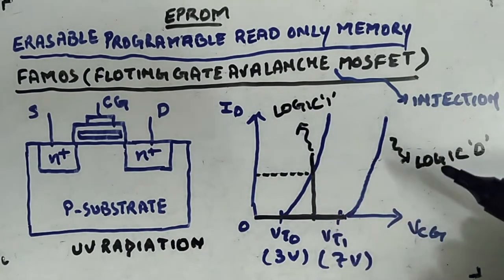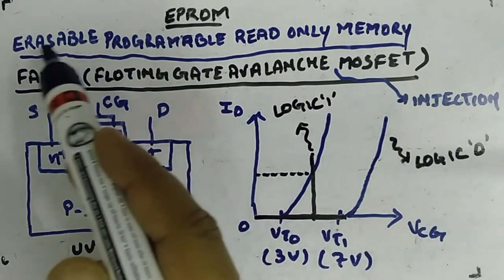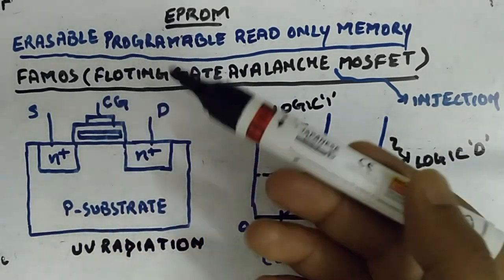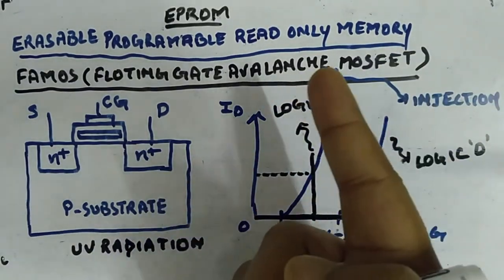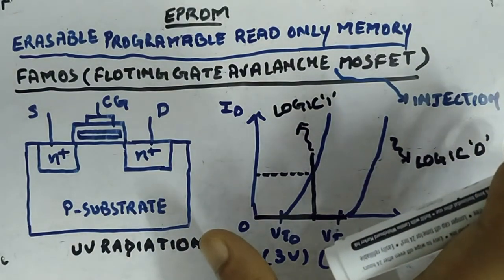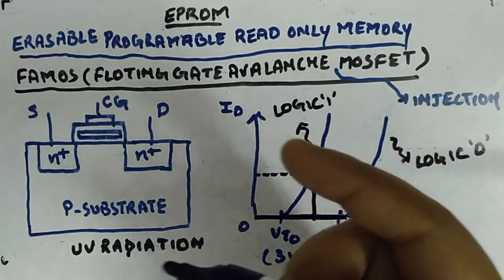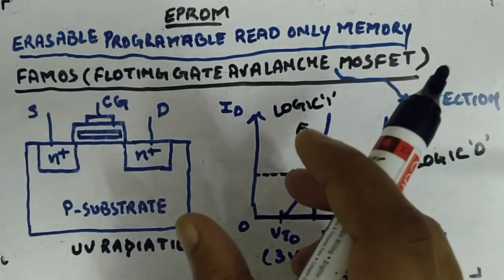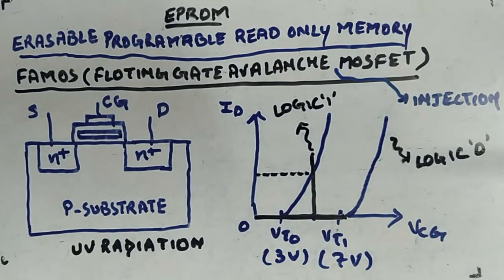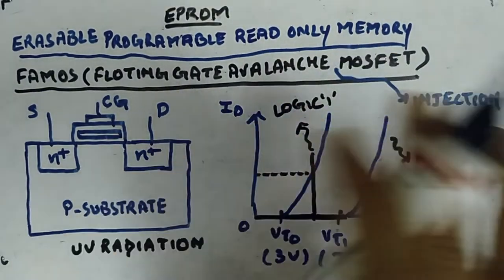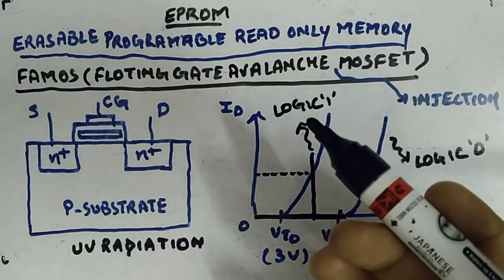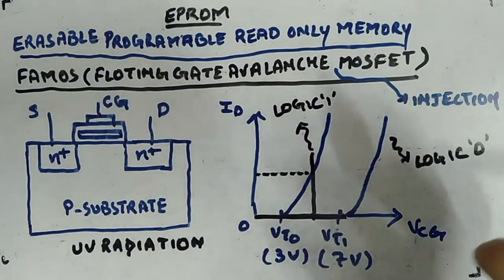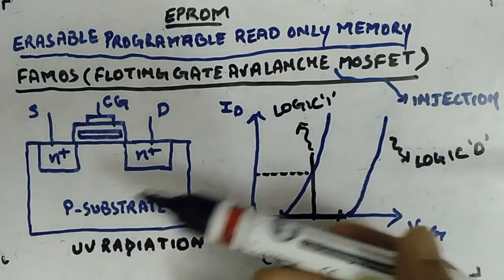After UV erasure, all transistors are reset to logic 1. If you then apply 25 volts for a few microseconds, you can program them for logic 0. That is how erasability works — UV radiation erases, and high voltage programs. Problems: first, you can only erase the full memory, not a single bit or single transistor. Second, you must eject the IC from the circuit, do the UV radiation, then put it back — which is inconvenient. This is why we move toward EEPROM.